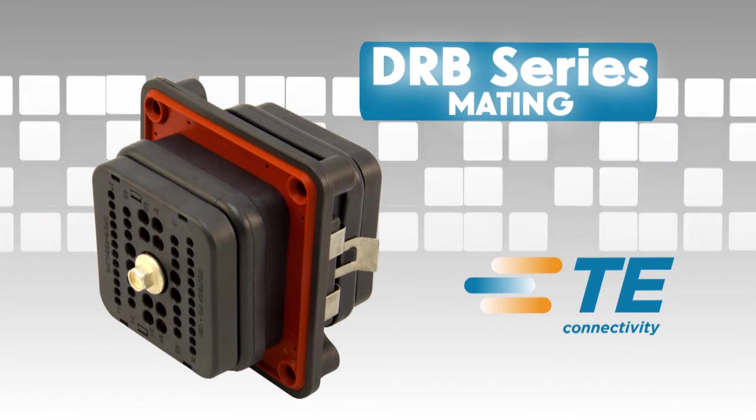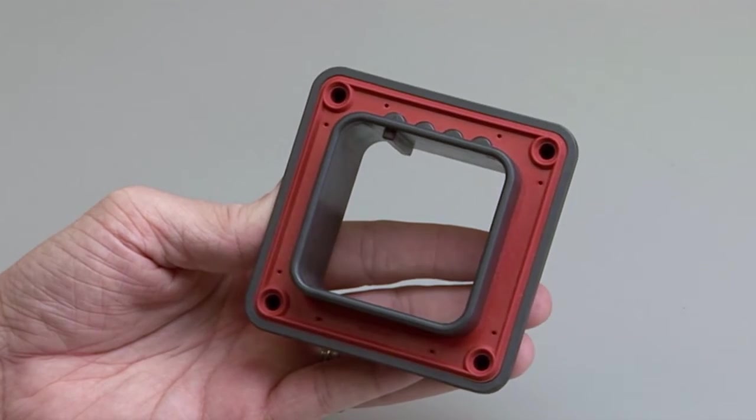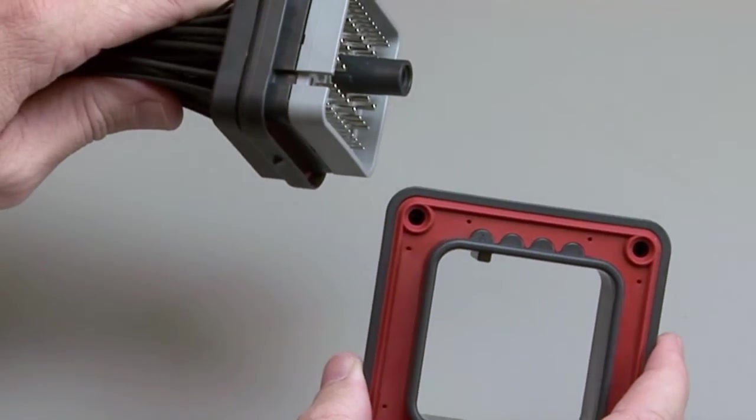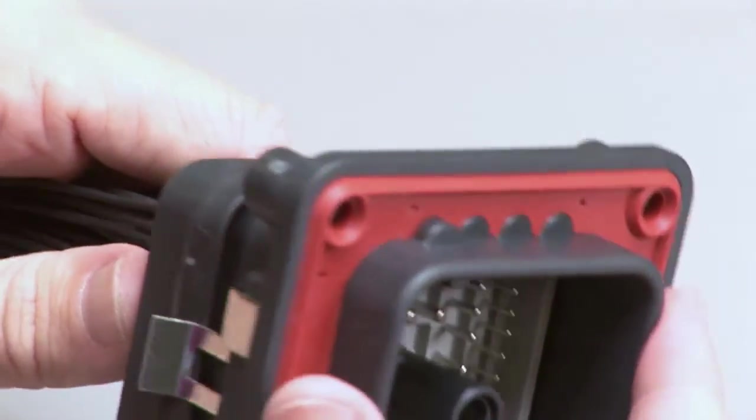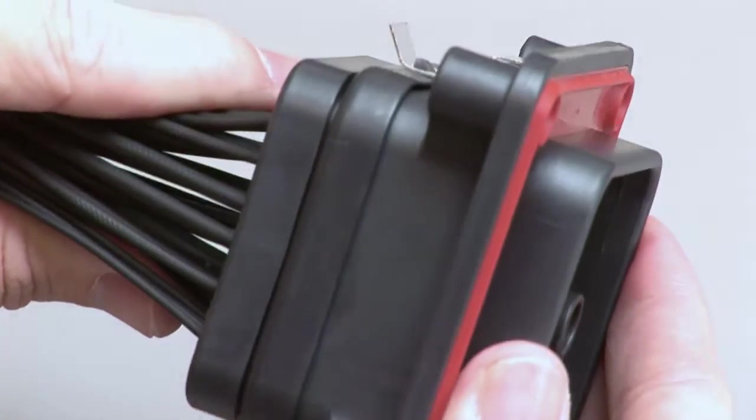DRB mating. A complete DRB assembly requires a mounting flange. Align the keys on the receptacle with the keys on the mounting flange. Insert the receptacle into the mounting flange until you hear and feel the retaining clips click.